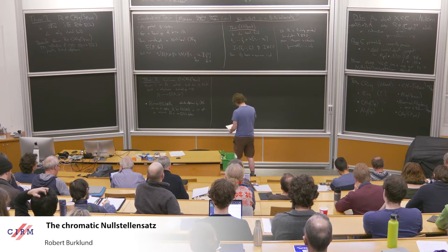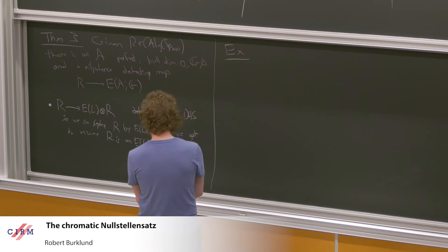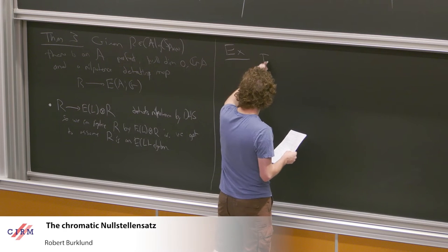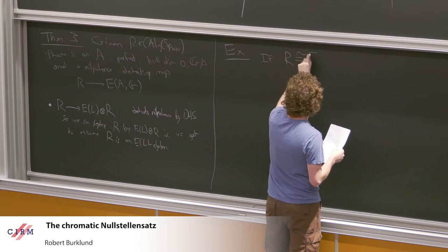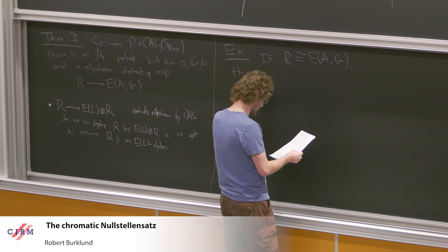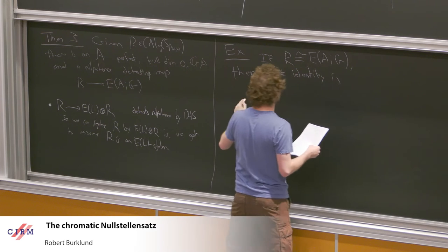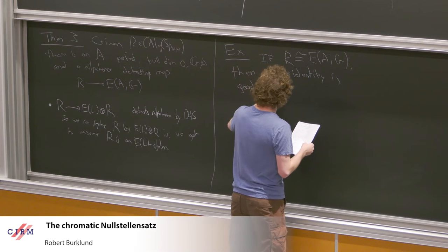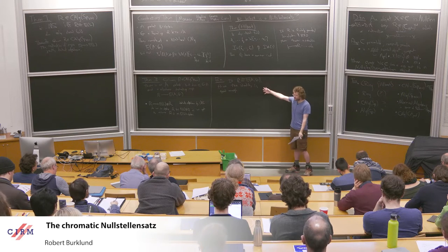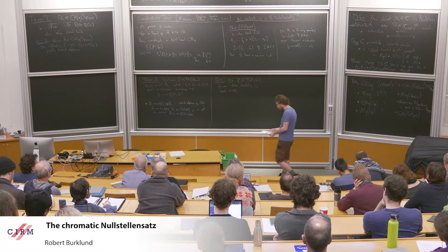Let me start with an easy case - this is somehow one of the most important cases that the whole argument orbits around. If R is isomorphic to E(A, G) for some A and G satisfying the right conditions, then the identity map is good enough. The rest of the proof revolves around looking at this example and asking ourselves: why isn't R already an E-theory? And what can we do about it?